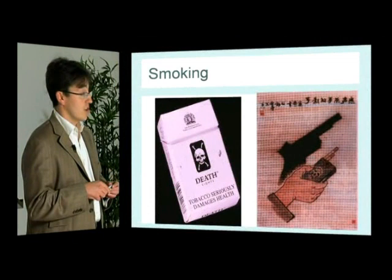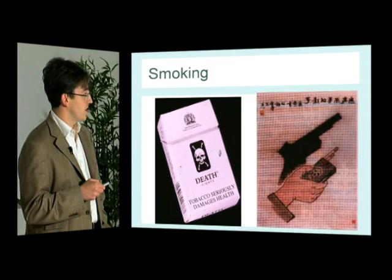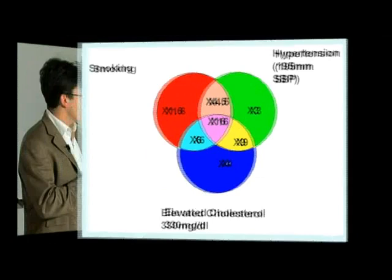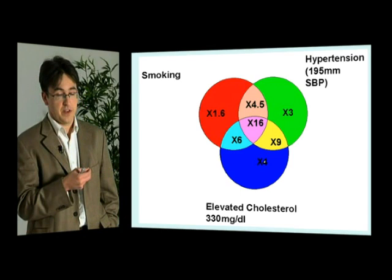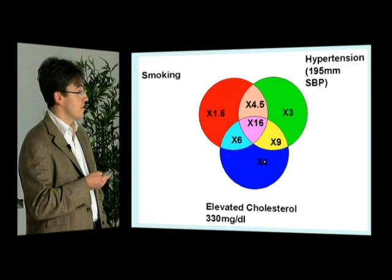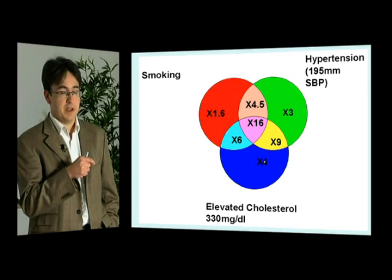Smoking has been known since the 1940s to be important for lung cancer, and more recently for arterial disease. It is a major risk factor we should try to limit at all costs. These risk factors are more important when considered together. In this Venn diagram: smoking gives a 1.6-fold increased risk, elevated cholesterol a 4-fold increase, and blood pressure above 195 a 3-fold increase. When all combined, a patient with all three risk factors has a 16-fold increase in arterial disease.